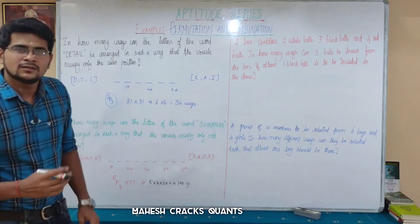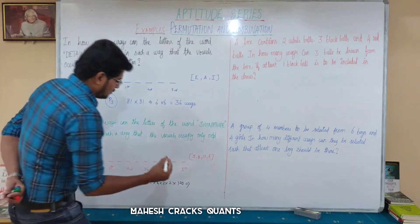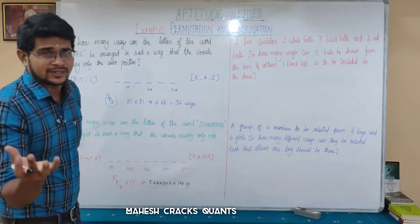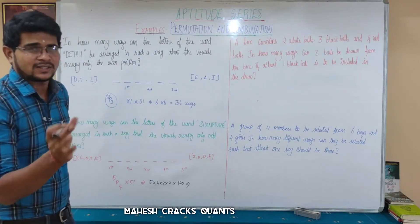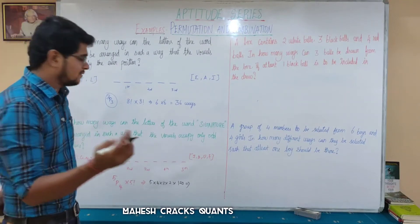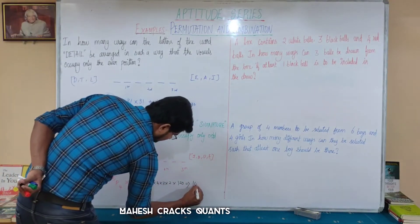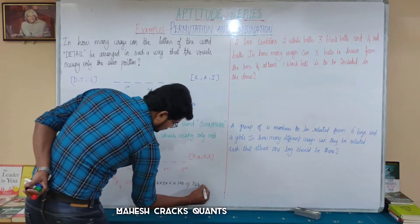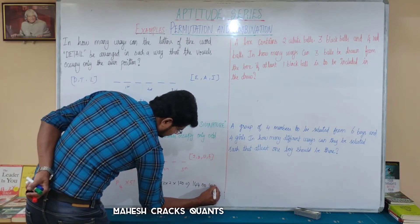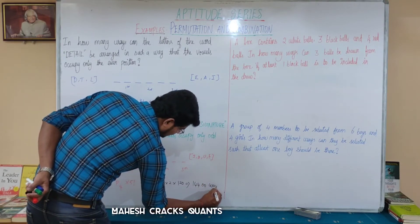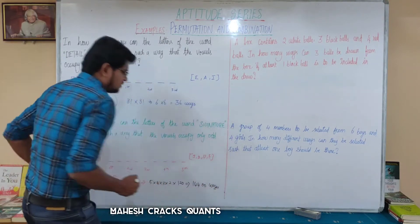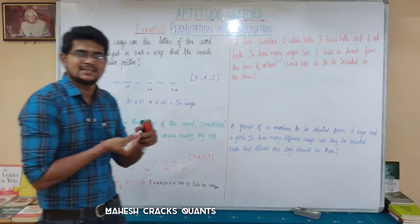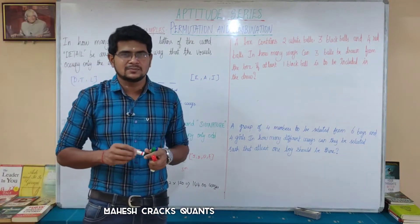120 into 120 equals 14,400. So there are 14,400 ways to arrange SIGNATURE such that all vowels come only in the odd positions.